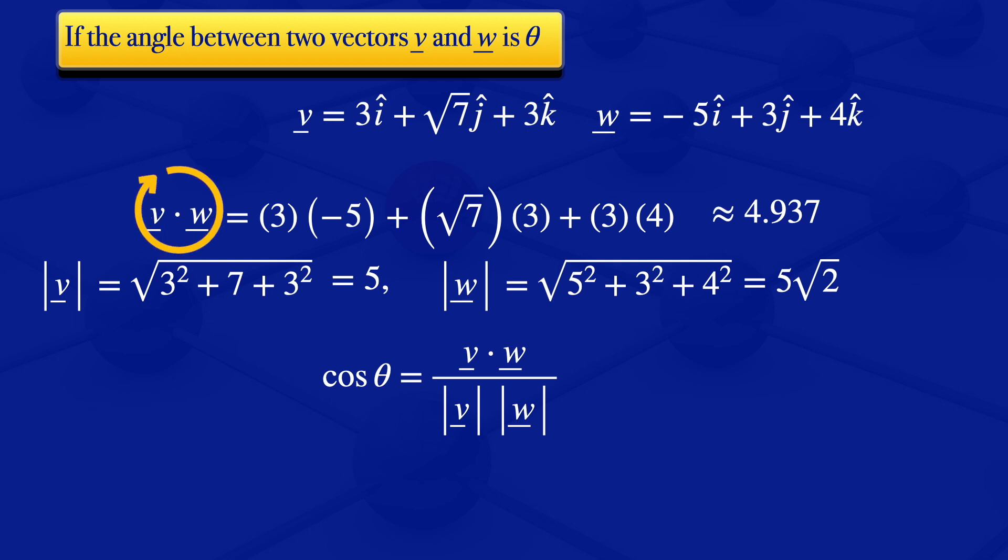So we now have our dot product, the norm of V and the norm of W. We substitute them into this formula and we get 4.937 divided by 25 times square root of 2. We have obtained cosine of theta.